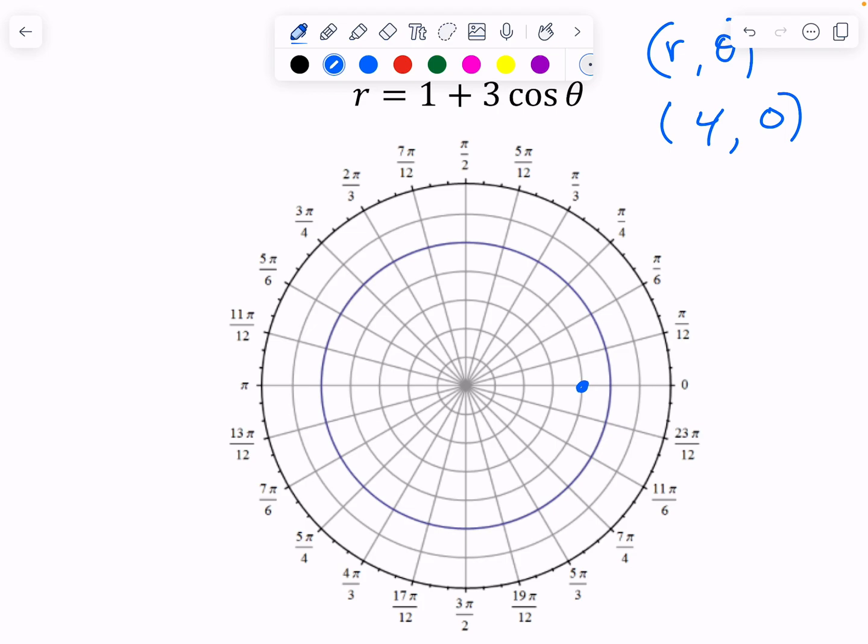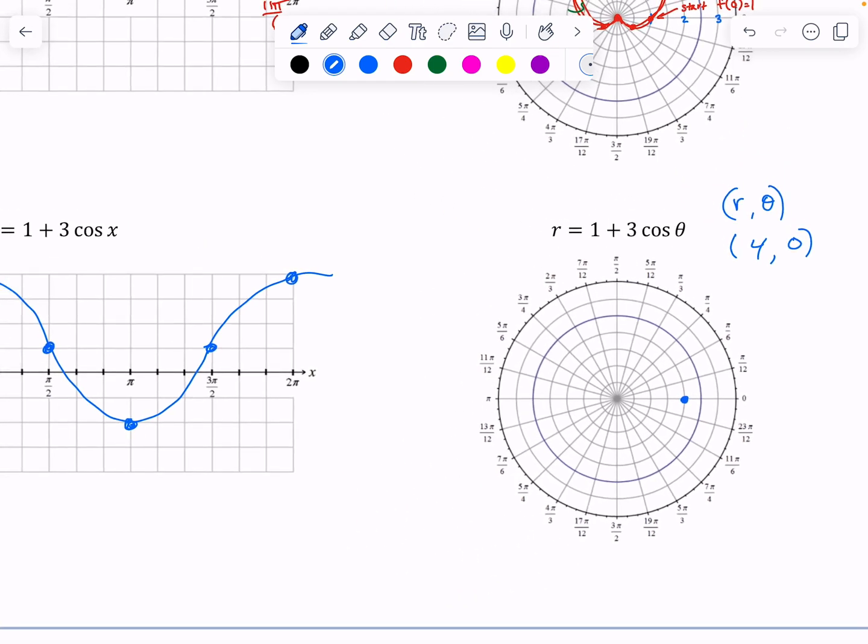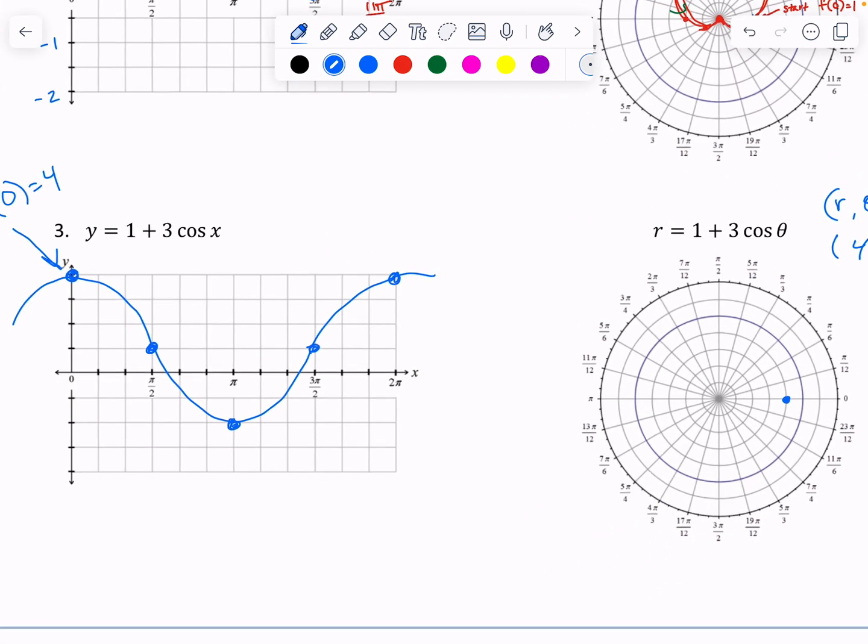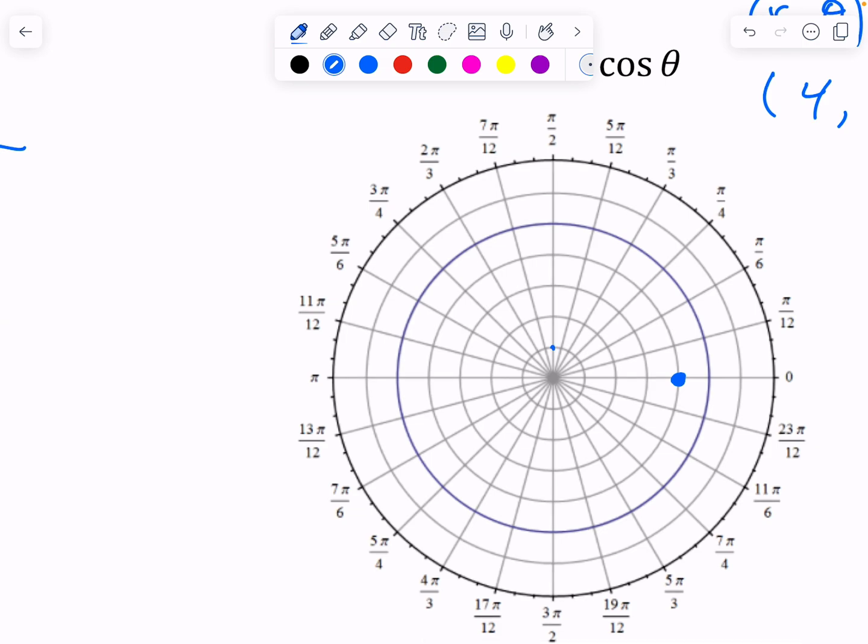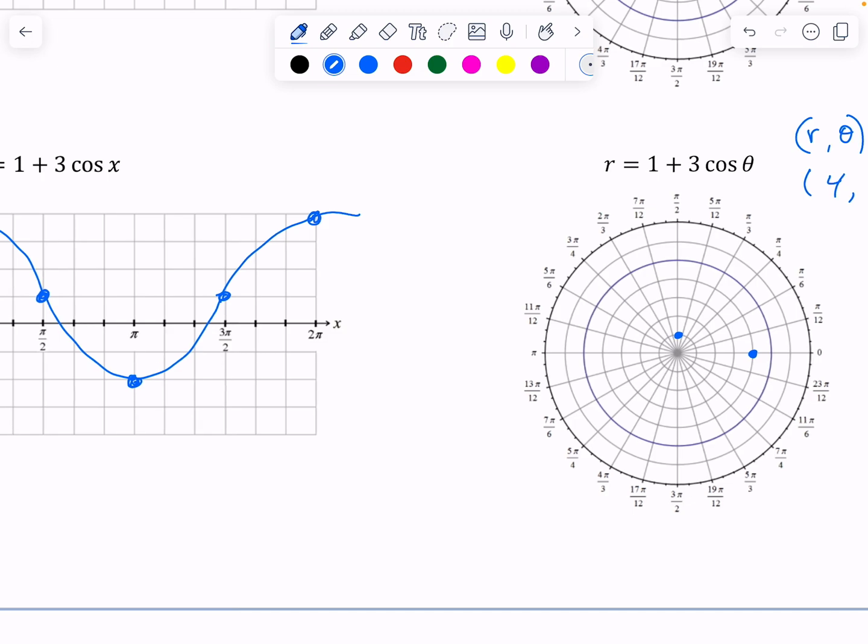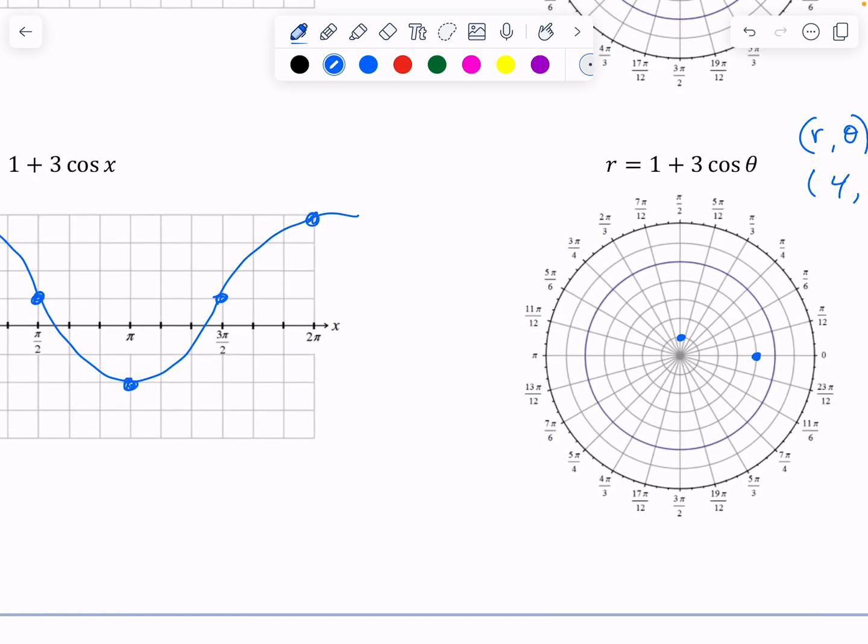And then at pi over two, we're at one. Well, we might need something else. We're at one. And then at, we do have a spot where we hit zero. It's just hard to tell where that is. Yuck. And then at pi, we're at negative two.